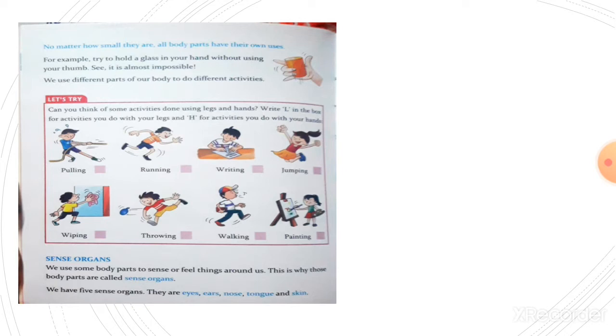Children, today we are going to understand about different work we do with our hands, legs, and other body parts. We use different parts of our body for different activities. Can you see the picture given here? Can you think of some activities done using legs and hands? Write L in the box for activities you do with your legs and H for activities you do with your hands.